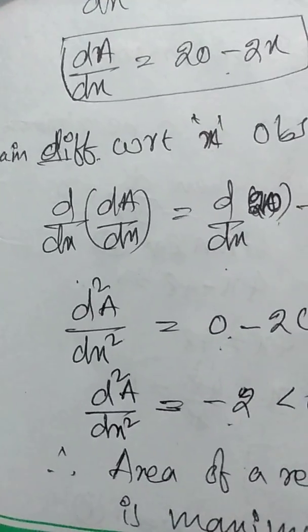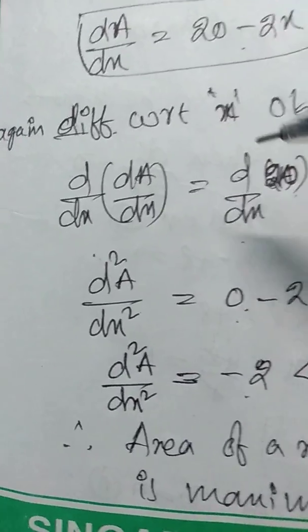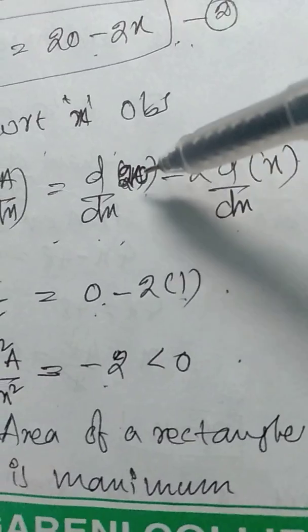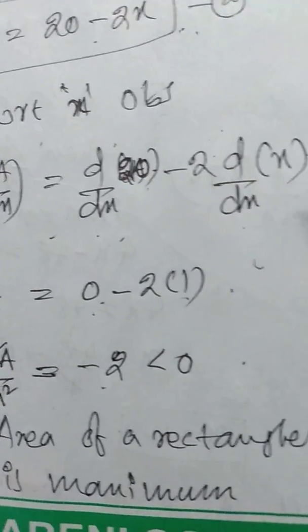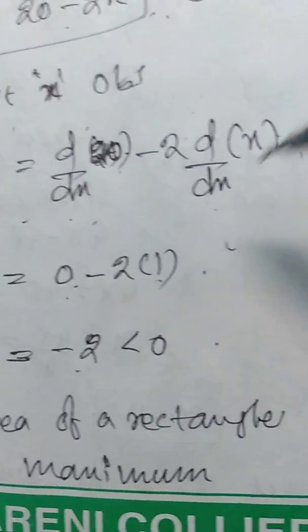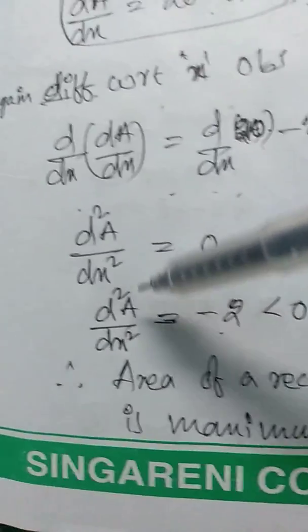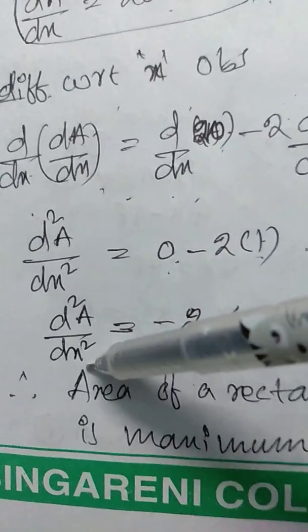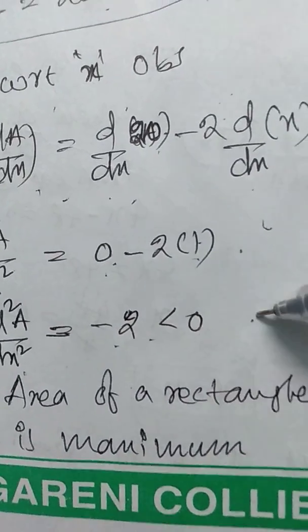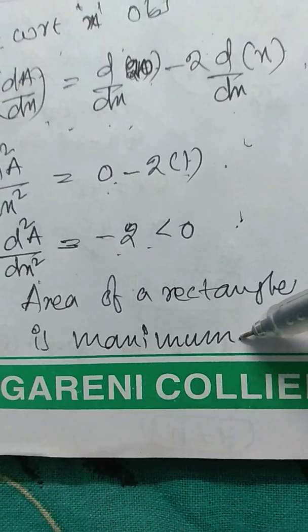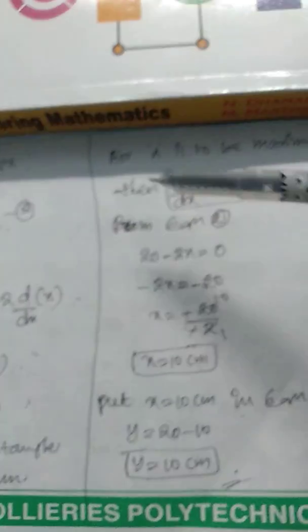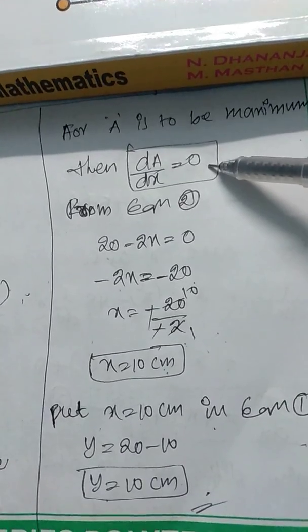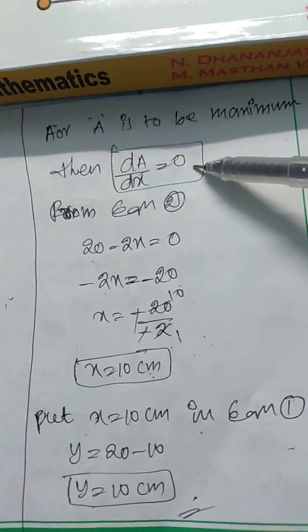So we differentiate again with respect to x on both sides. d/dx(dA/dx) = d/dx(20 - 2x). Derivative of constant is 0, derivative of x is 1, therefore d²A/dx² = -2, which is less than 0. Therefore the area of the rectangle is maximum.